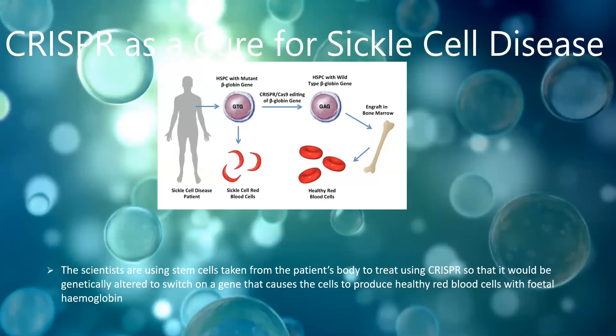CRISPR could be the cure that puts an end to sickle cell disease, and it is currently being tested at the Institute Imagine in France. The scientists are using stem cells taken from the patient's body, treating them using CRISPR so that they would be genetically altered to switch on a gene that causes the cell to produce healthy red blood cells with fetal haemoglobin, as seen in the diagram below. The research is still in the animal trials stage, and there are still some obstacles to overcome. For example, to put the genetically altered stem cells back into the bone marrow, surgery with high risk and long post-surgery stays make it not completely ready yet.